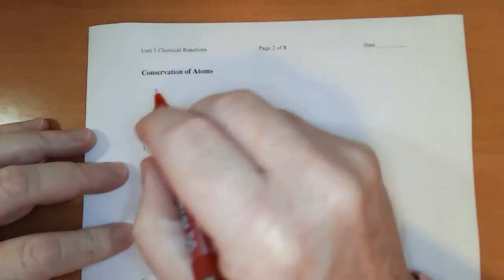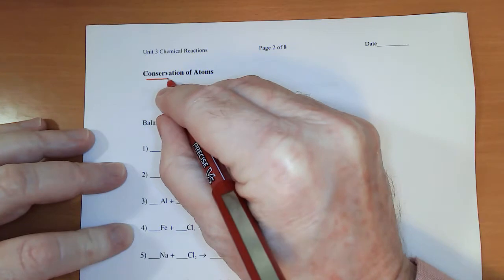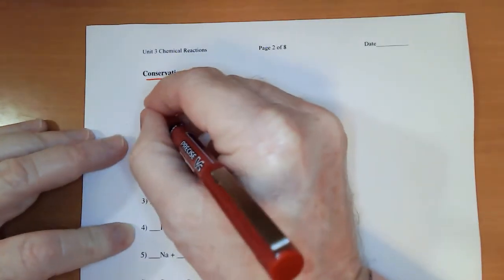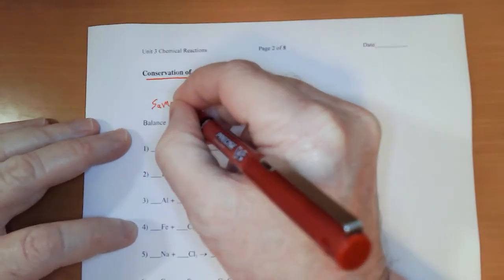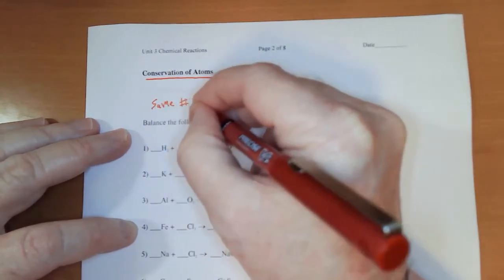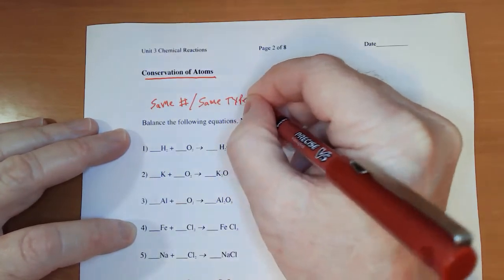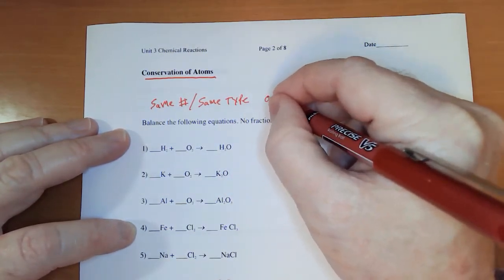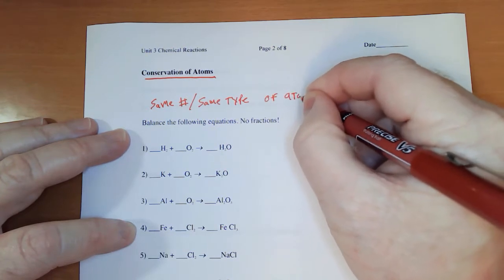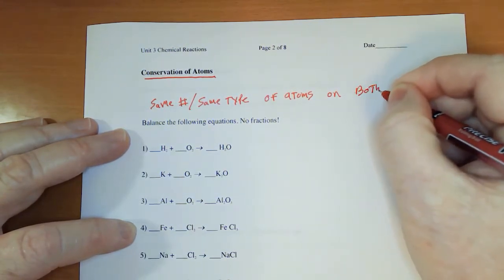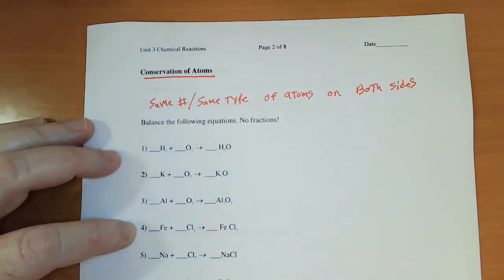The principle behind what we're doing is basically called conservation of atoms and it says that you will have the same number and the same type of atoms on both sides of a chemical equation.